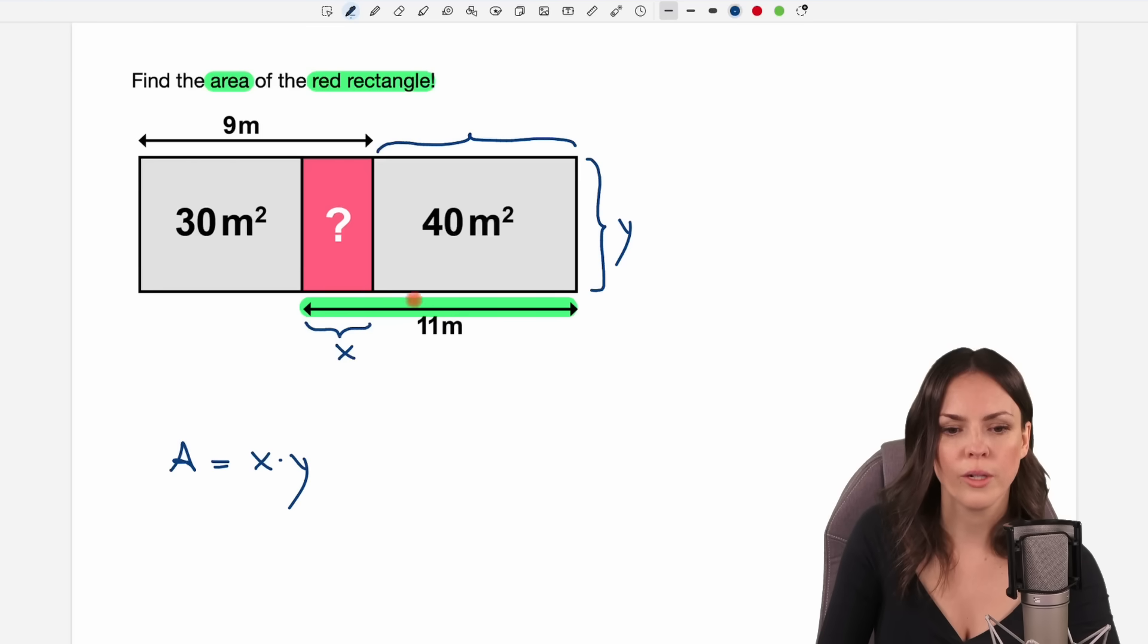We don't know it exactly but we know the length of this part here is 11 meters but that would be too long. We only want the length of this rectangle here so we don't need this part. To get the length of this side, we take the 11 and subtract x.